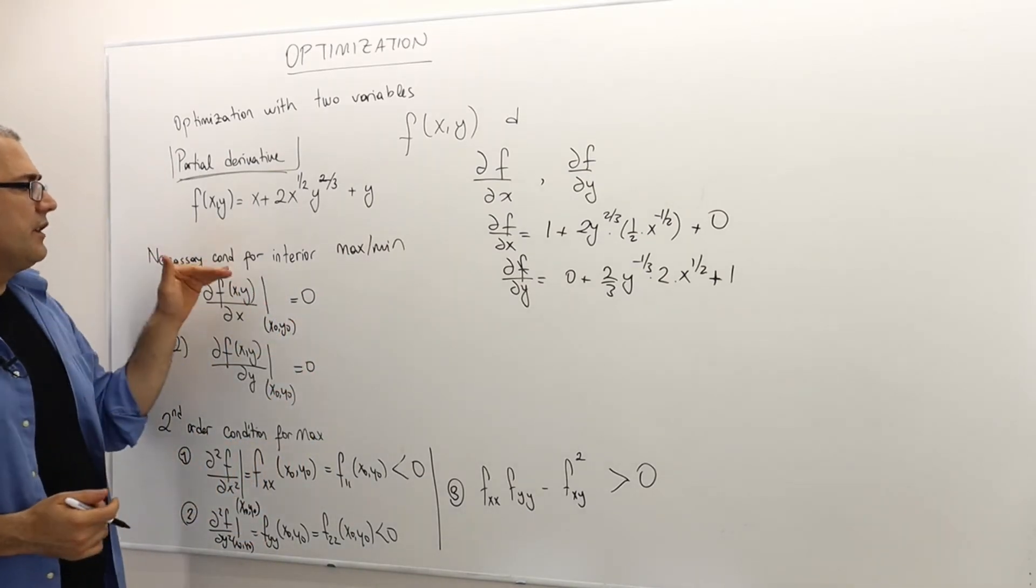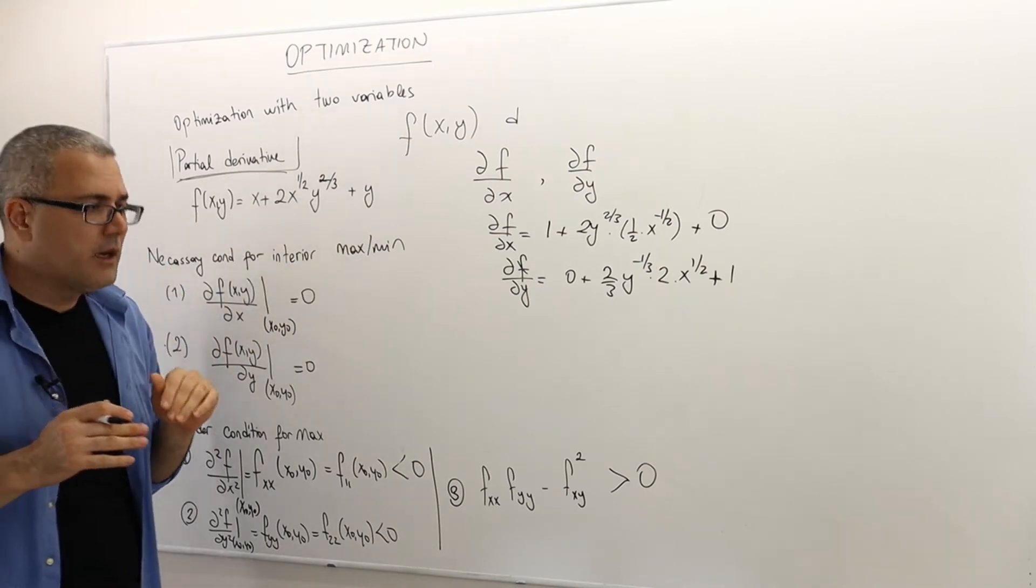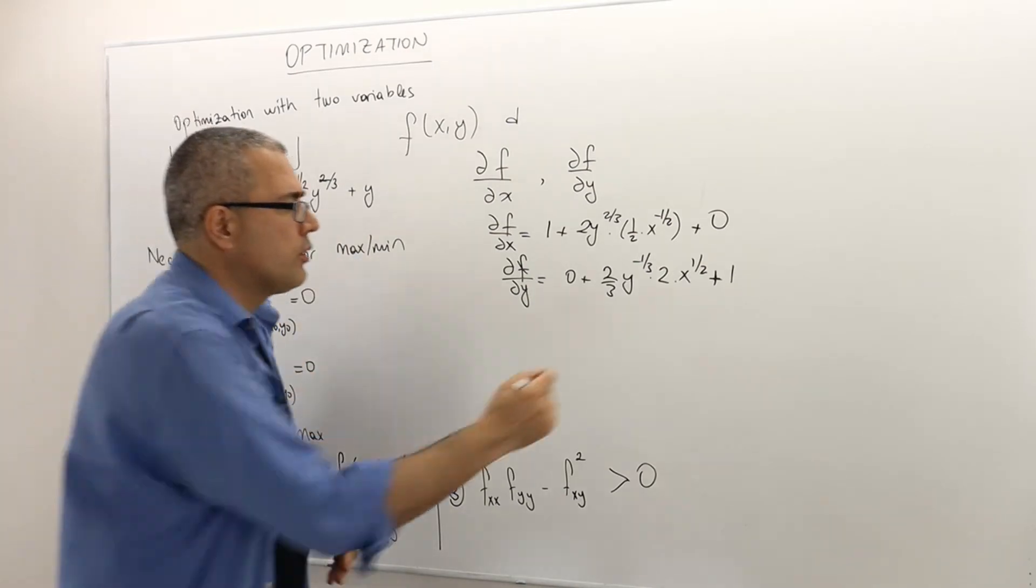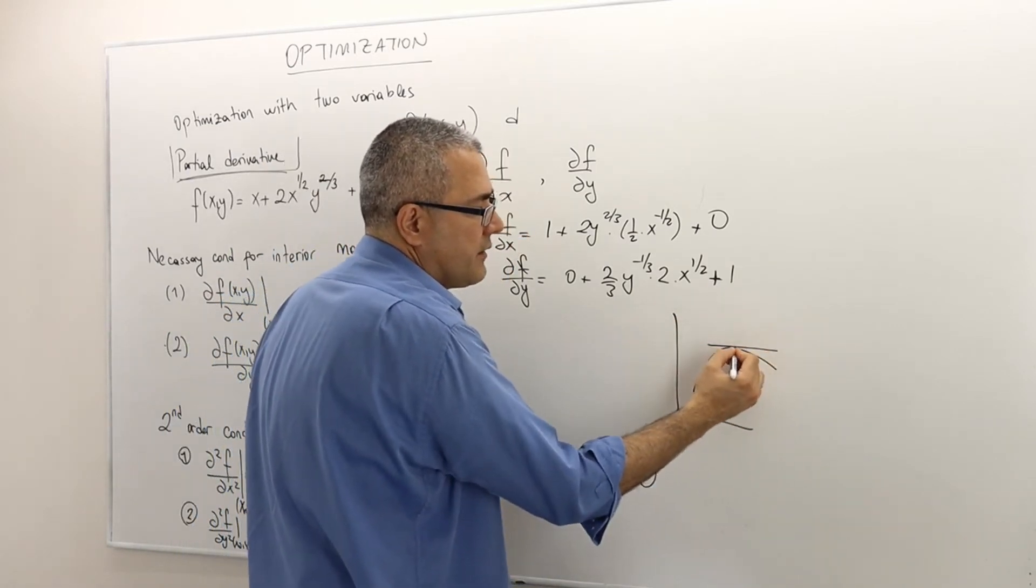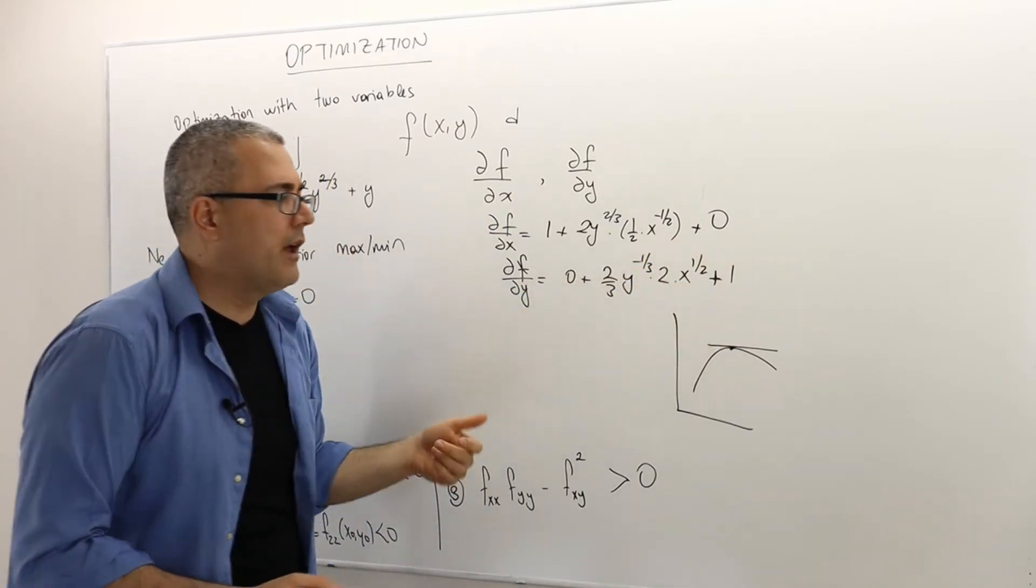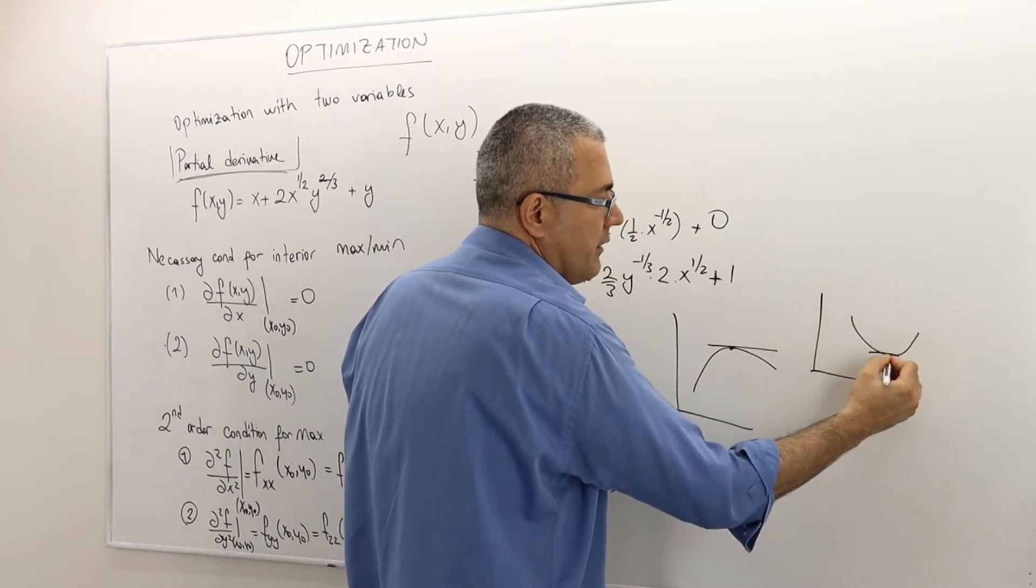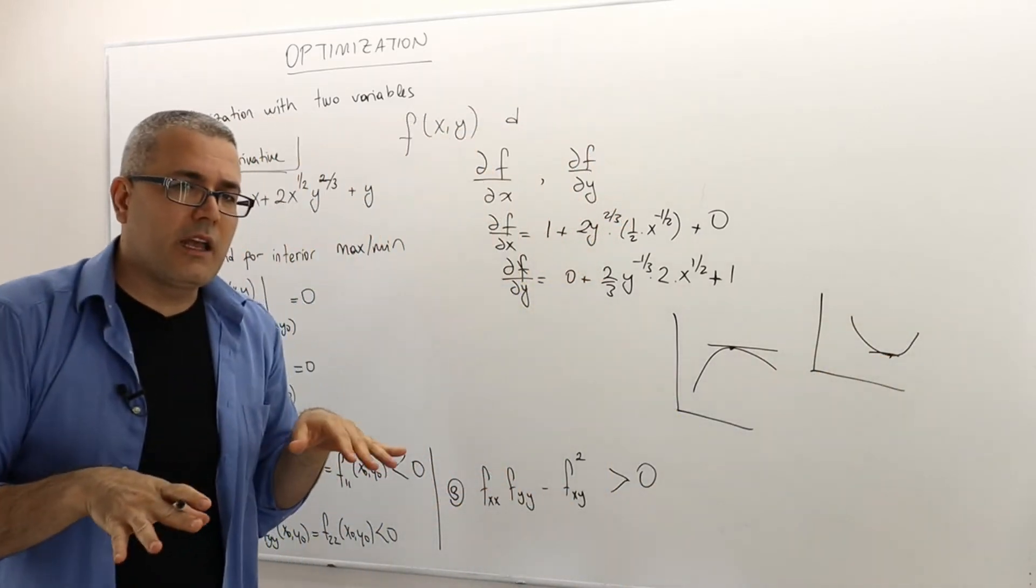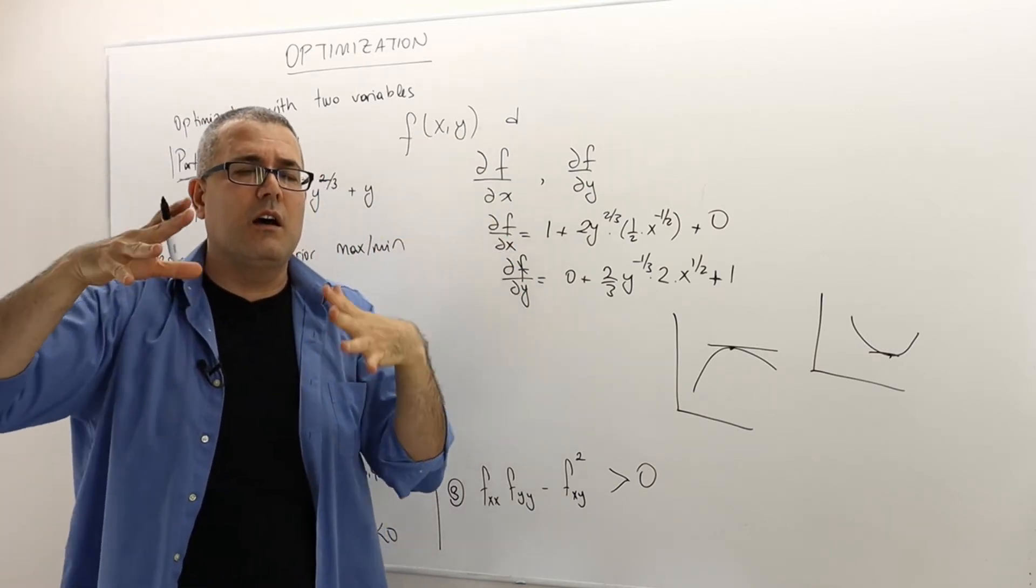So what is the necessary condition for interior max or minimum? So very similar in a one-dimensional world, I had the function has to have this tangent line slope 0 thing so that it's global, I'm sorry, a local max or local min.